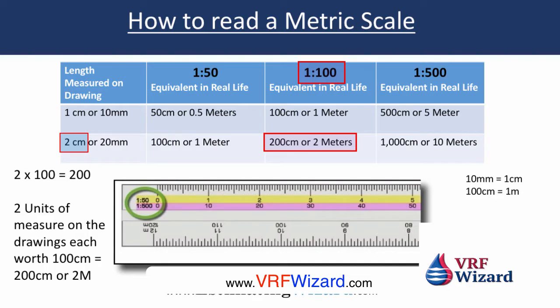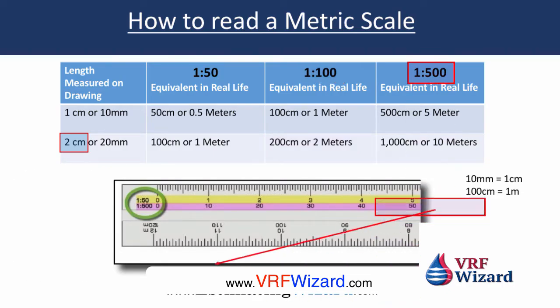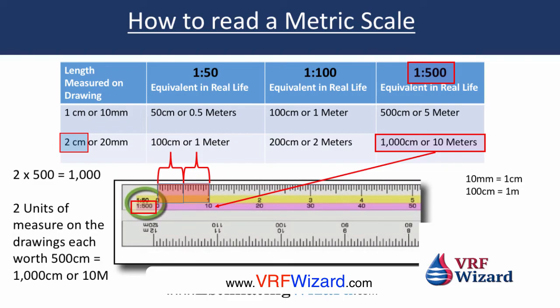On a 1 in 100 scale, 2 centimeters would be 2 meters. And on 1 in 500, 2 centimeters on your drawing is equivalent to 1,000 centimeters, or 10 meters. You can see that on the bottom of the scale there — the pink, 1 in 500 — the 2 centimeters, shown by the two brackets there, equals 10 meters.